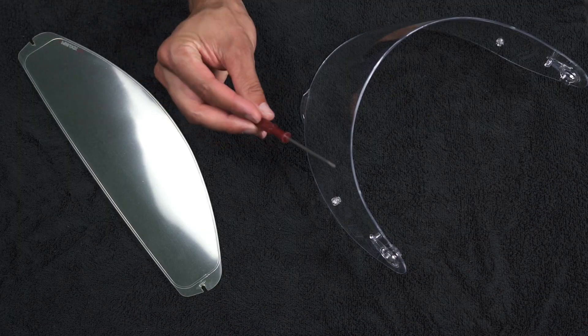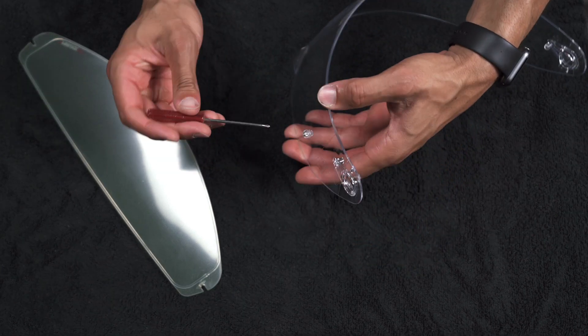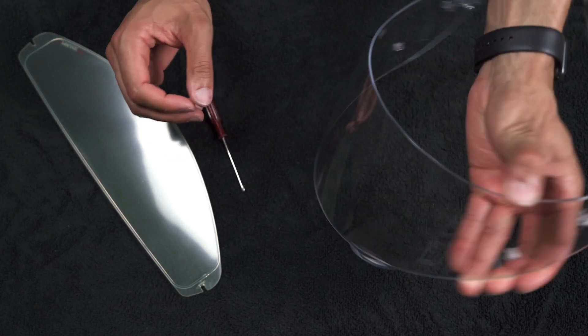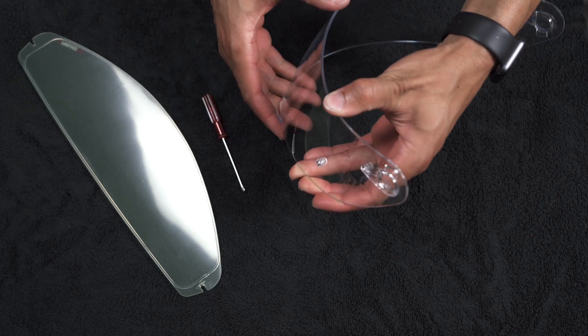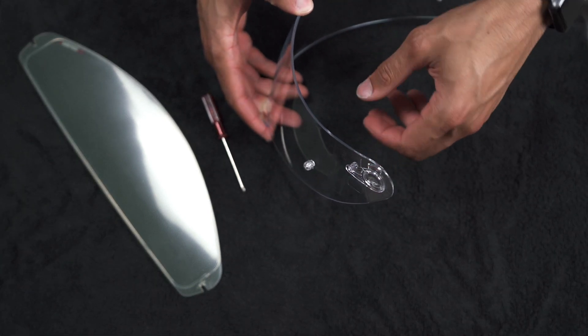Alright guys, in the next step, you may want to grab yourself a small Phillips head screwdriver and you're going to want to loosen the screw. It helps loosen the tension on either side of the visor. That way it makes it easier to maneuver the lens around inside when you're trying to install it.